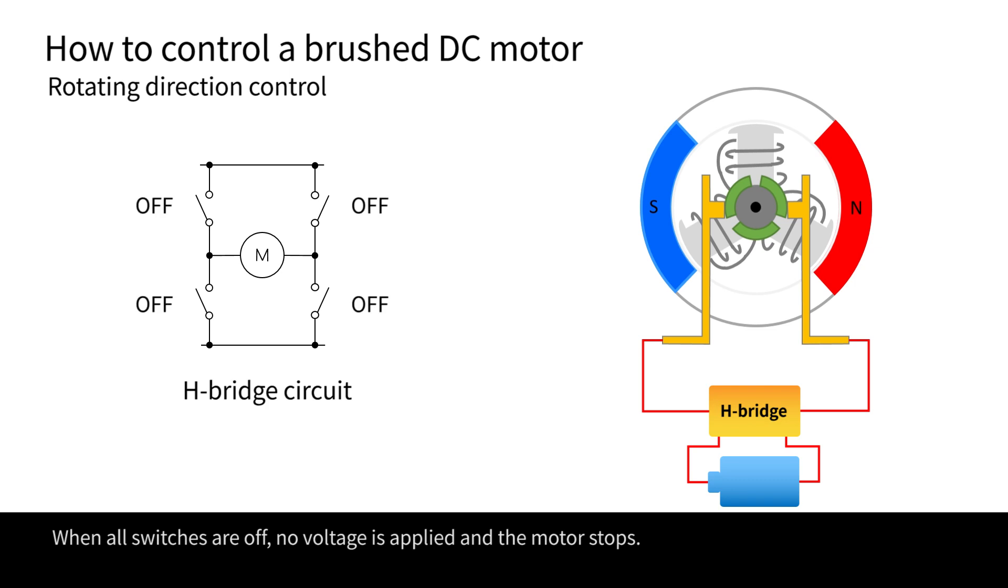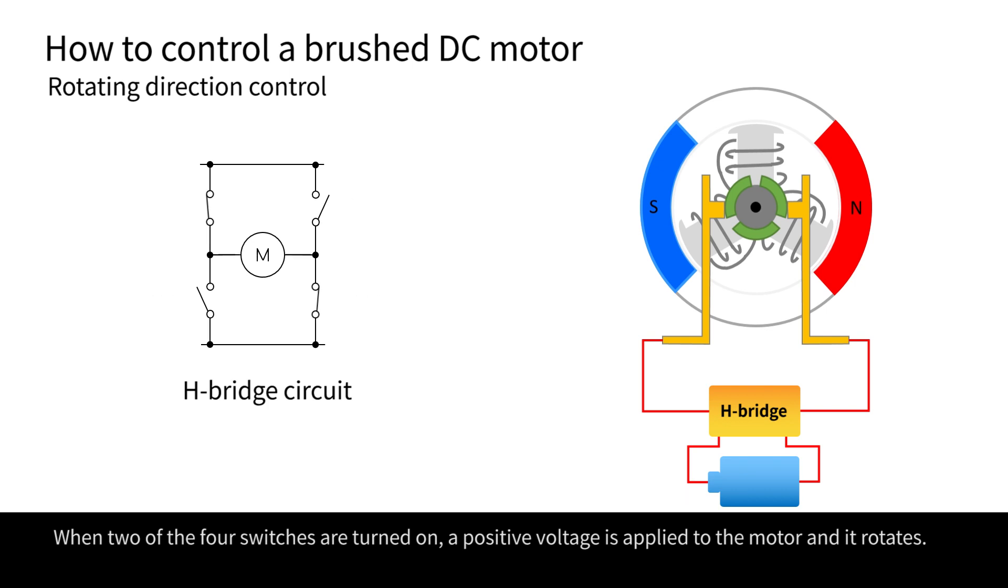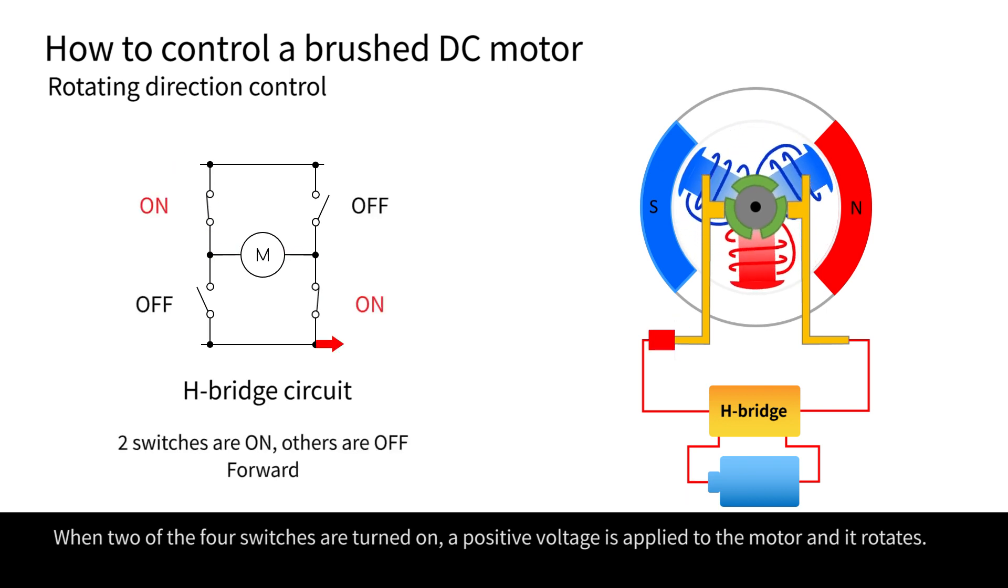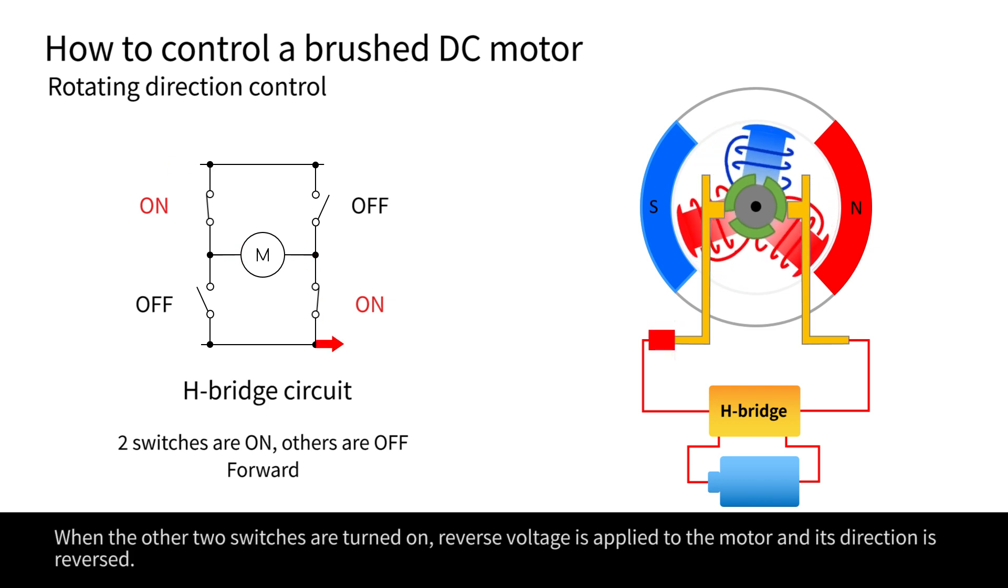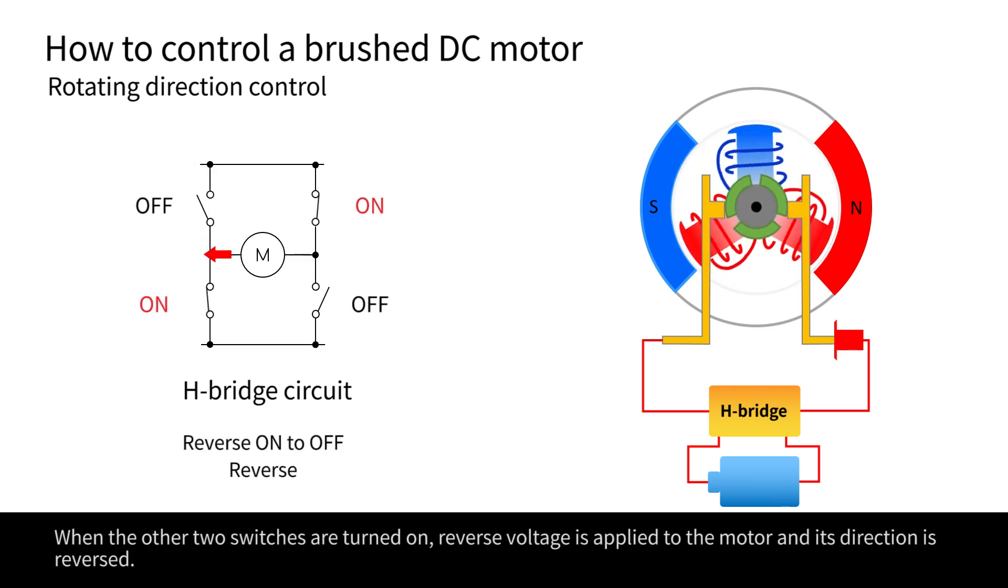When all switches are off, no voltage is applied and the motor stops. When two of the four switches are turned on, a positive voltage is applied to the motor and it rotates. When the other two switches are turned on, reverse voltage is applied to the motor and its direction is reversed.